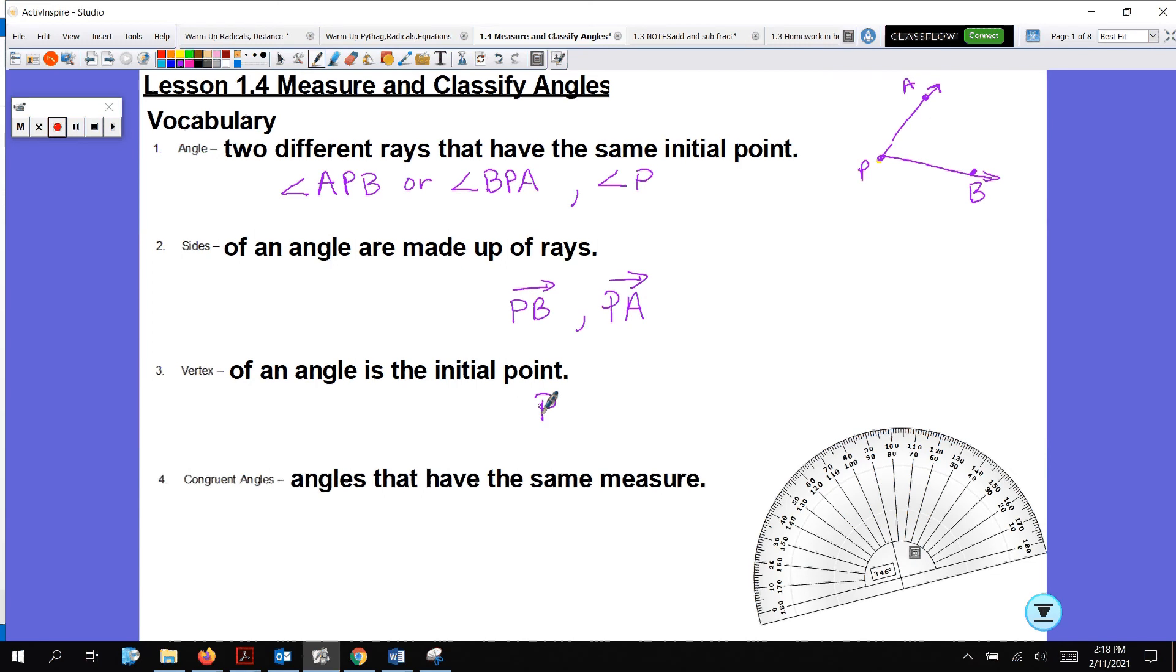And congruent angles have the same measure. Like, let's just say angle A is congruent to angle B. If you need more time to copy down the definitions, just pause the video right now, and you can take your time.